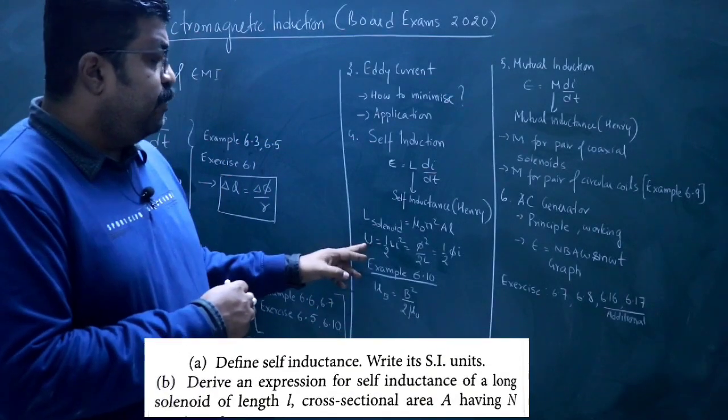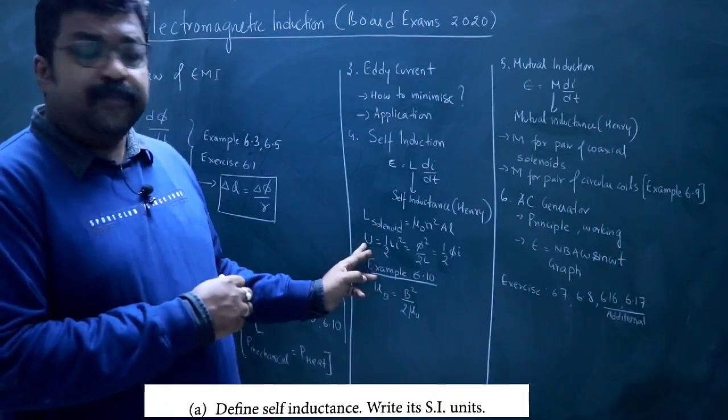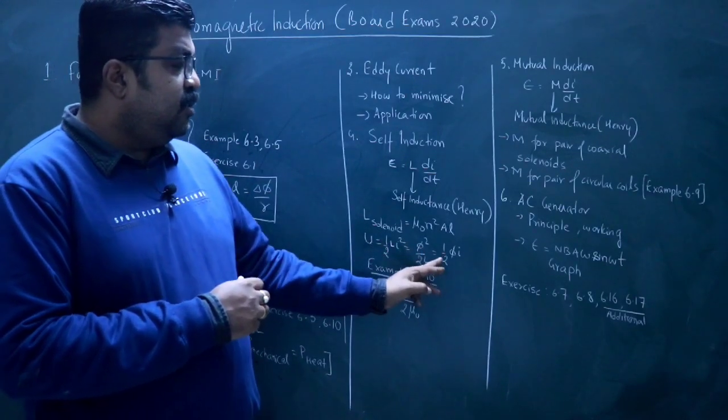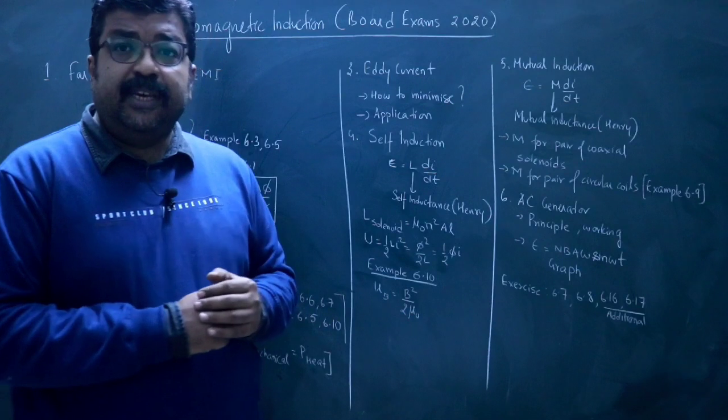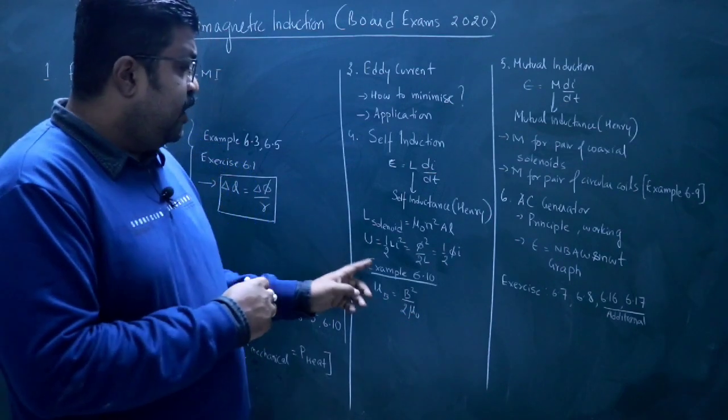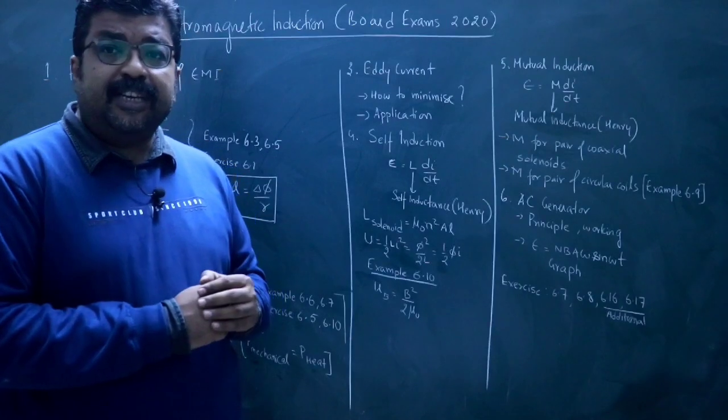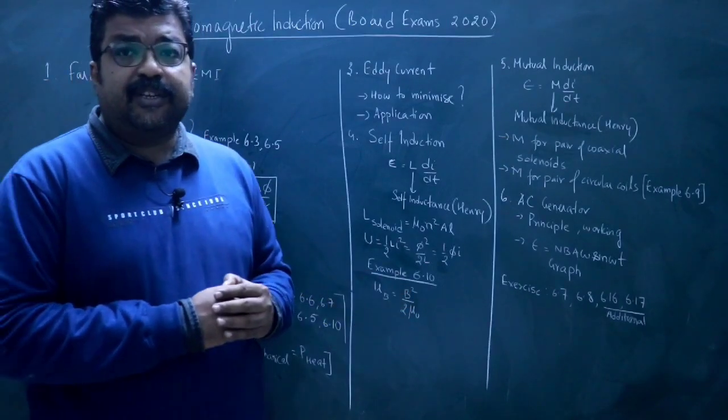Then the expression of magnetic potential energy is half Li square. That is equal to phi square by twice L is equal to half phi I. This is also the derivation. Then the expression of 6.10 is B square by twice mu naught. This is also the derivation.